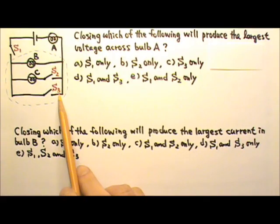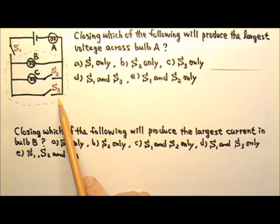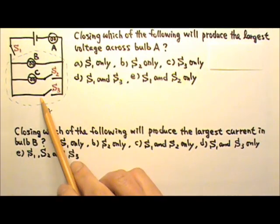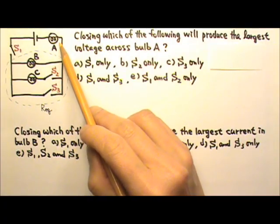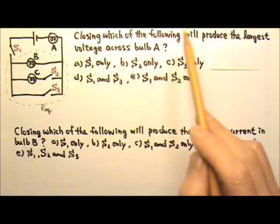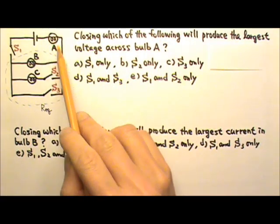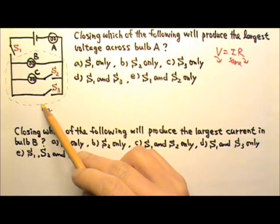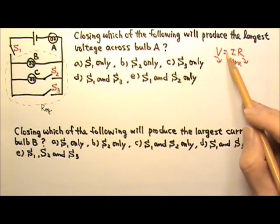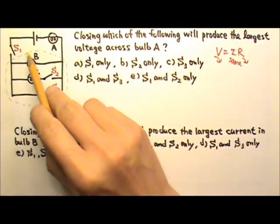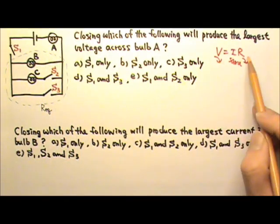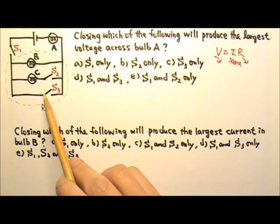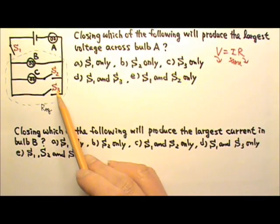When all three switches are closed, these three segments will be in parallel, and then together they will be in series with bulb A. So the equivalent resistance of these three in parallel would be in series with bulb A. That means that together they have to share this total voltage. We want the largest voltage across bulb A. That means we want the least voltage across this part. Because this combination and bulb A are in series, they get the same current. So if we want this group to have less voltage, that means we want the least resistance possible. And we know the more resistors we have connected in parallel, the smaller the equivalent.